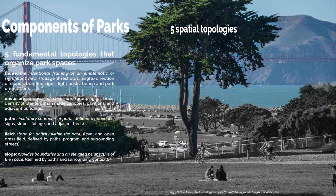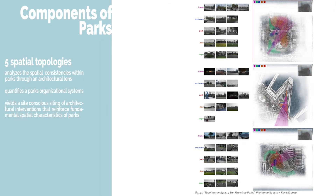To mindfully intervene within an existing park, I looked at the parks through an architectural lens, breaking them down into five fundamental topologies. Frame: the intentional framing of an emblematic or significant view through the use of foliage, thresholds, angle, direction, slopes, branded signs, light posts, benches, and a park's orientation. Enclosure: a sense of enclosure created by groupings of trees, density of planters, man-made canopies, pavilions, and adjacent buildings. Path: the circulatory character of the park, defined by benches, signs, slopes, foliage, and adjacent trees. Field: the stage for activity within the park — a level and open grass field defined by paths, program, and surrounding streets. Slope: provides boundaries and an elevated perspective of the space, defined by paths and the surrounding context.